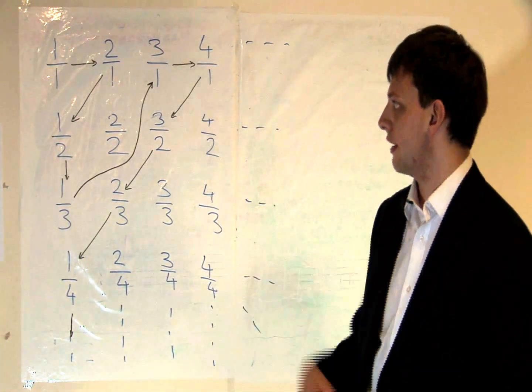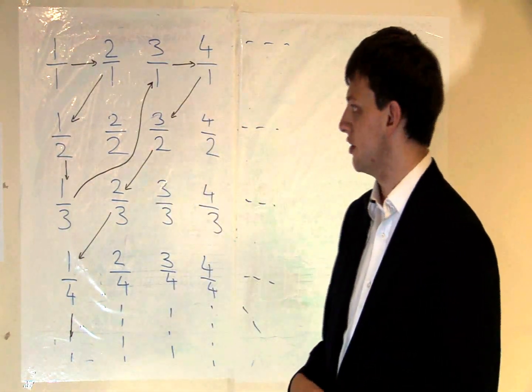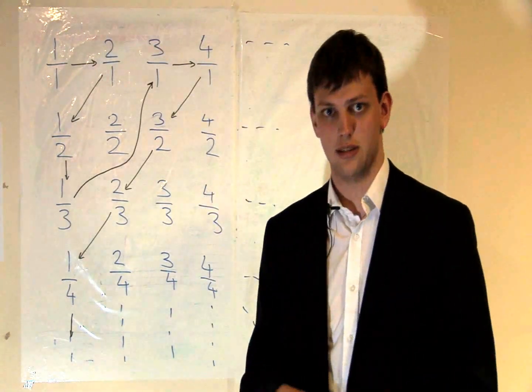We can write out the fractions in a grid like this. As we go right along a row, the numerators increase, and as we go down a column, the denominators increase.